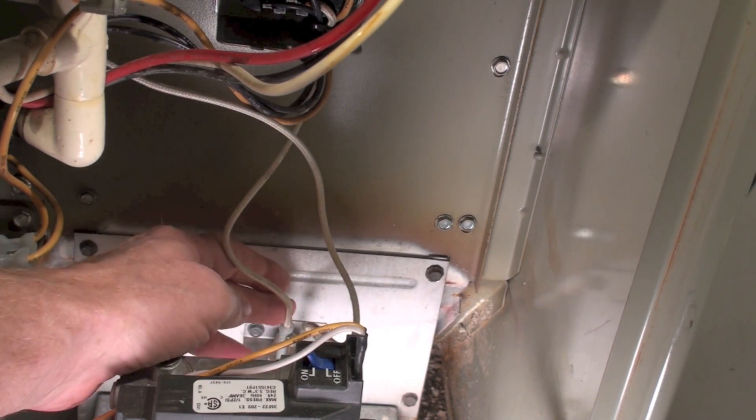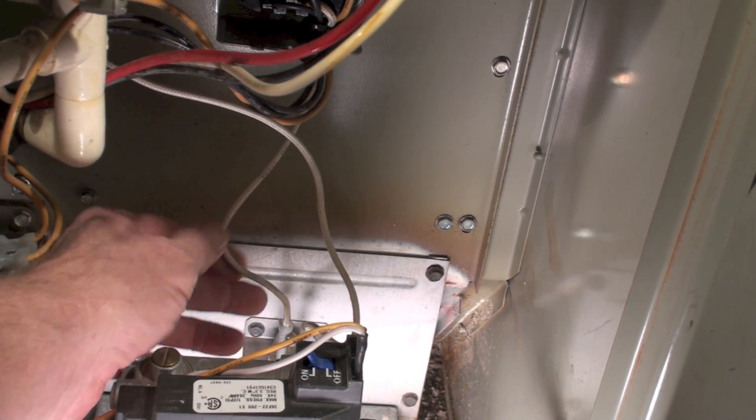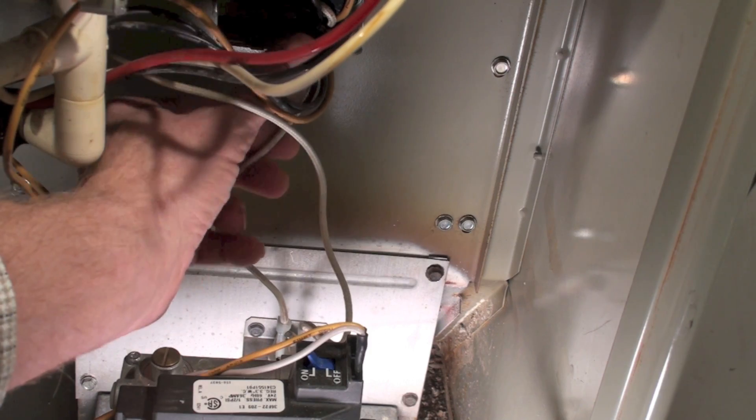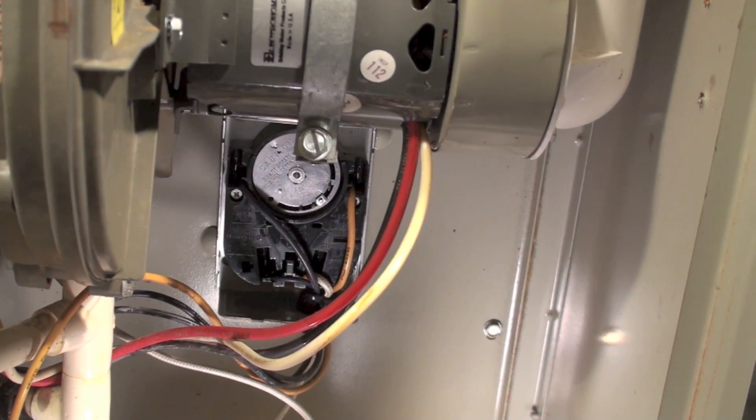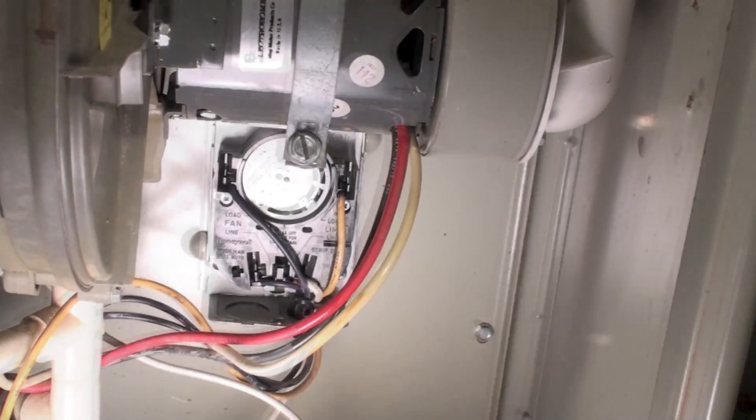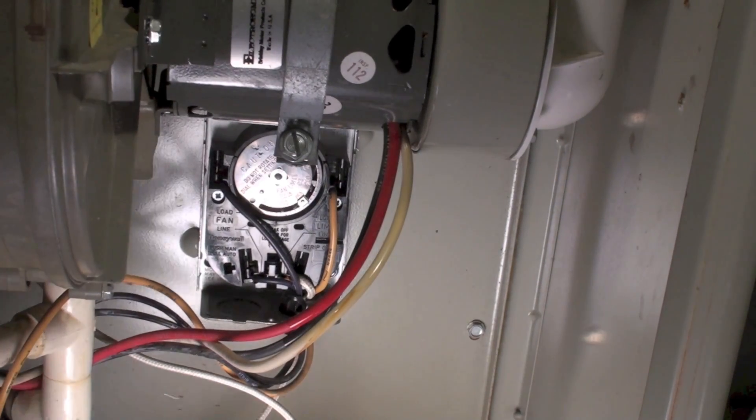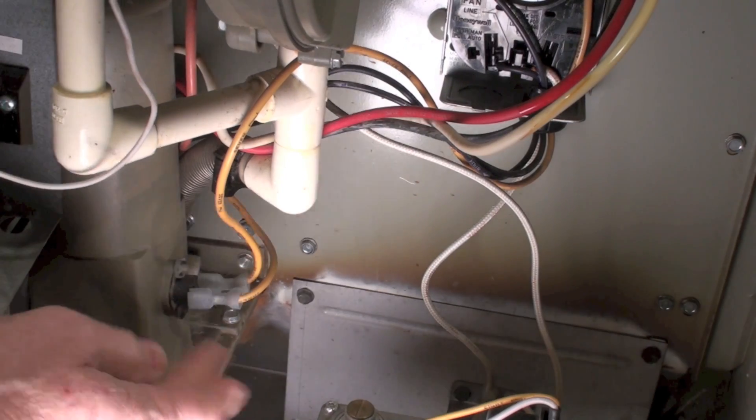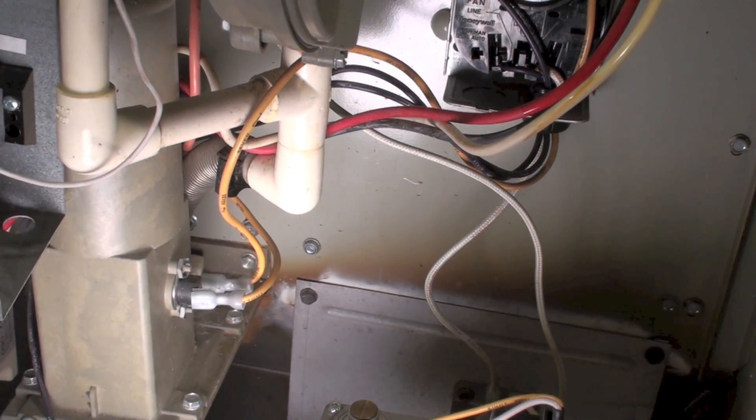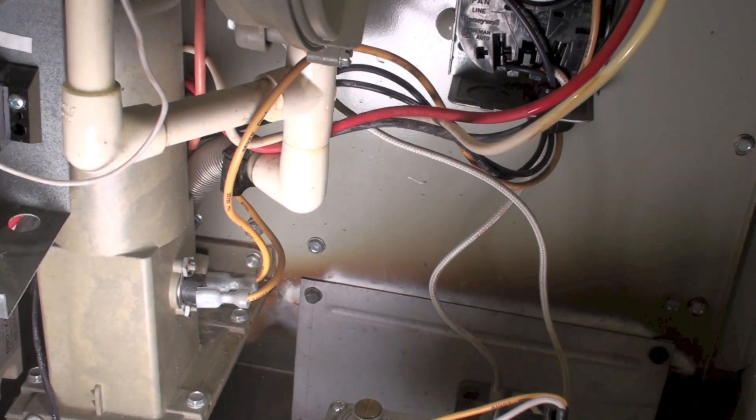It goes down to this rollout switch right down there, then up to the limit right there. After the limit, it goes over to this switch here, which is a limit switch for high vent temp.